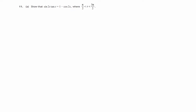Here we have a trig identity that we're asked to prove. We're asked to show that sin 2x times tan x is the same as 1 minus cos 2x. Don't worry too much about the range in which x is found — tangent of x is not defined when x is pi over 2 or 3 pi over 2, so they're just giving a range where this all makes sense.